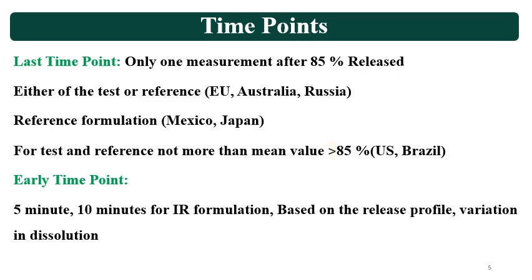If your Q point is 45 minutes for 85% release, then only one time point can be considered after that, such as 60 minutes. Either the test or reference formulation giving 85% or more release should be considered. If the test formulation is slower and not giving 85% release but the reference formulation is, then the reference formulation should be considered. This is as per Europe, Australia, and Russia, and reference formulation as per Mexico and Japan.